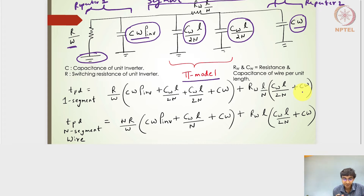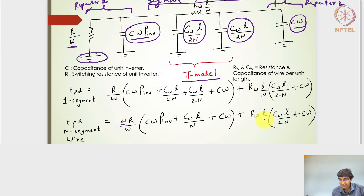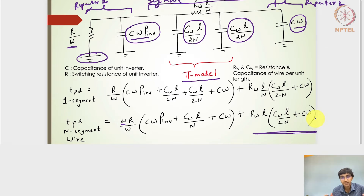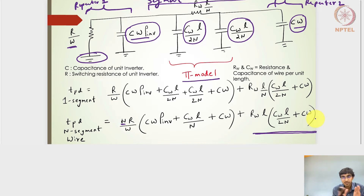For n segments of the wire, everything is multiplied by n. When multiplied by n, the n in the denominator cancels out, so the second part of the delay expression becomes rw·l multiplied by those two capacitances. We have now expressed the overall delay for n segments of a wire of length l with repeaters inserted between each segment.